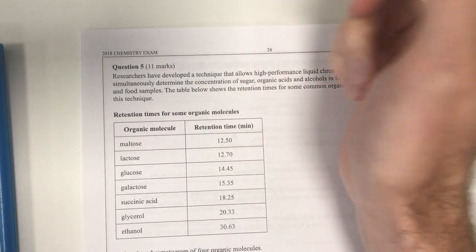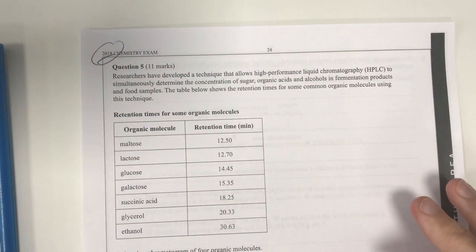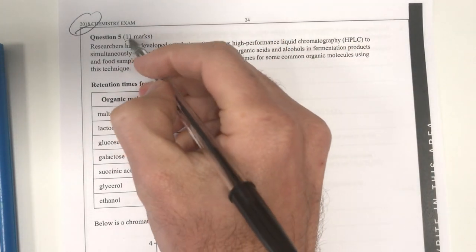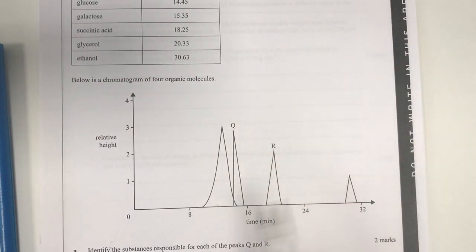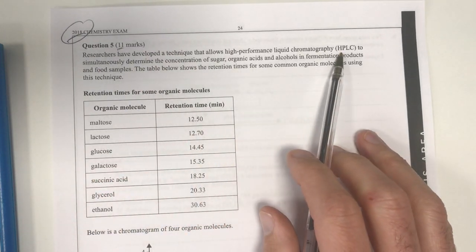So this is question number five for the 2018 chemistry VCE exam. This one's worth 11 marks and it looks like it's about HPLC because I can see some nice peaks here and some retention times.